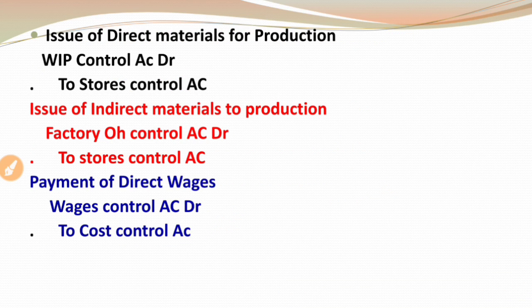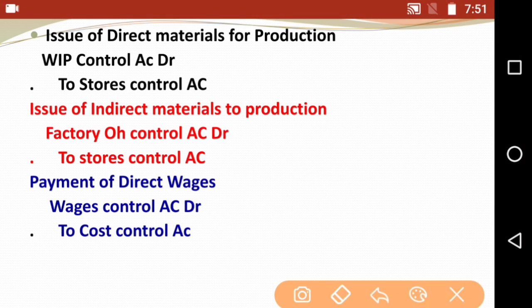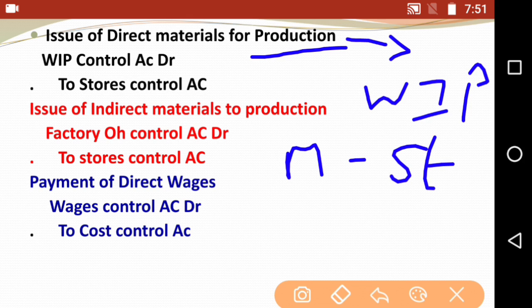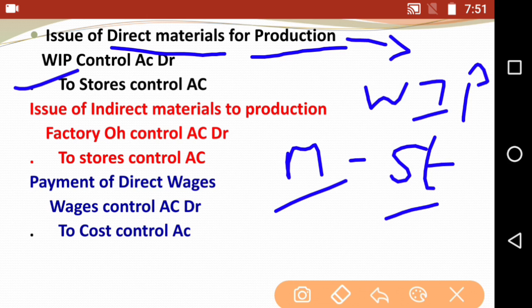Next is issue of direct materials for production. Since it involves materials going out, we credit stores, and since it is for production we debit WIP. The entry is: WIP control account debit to stores control account. Keep this basic rule in mind — production-related debit goes to WIP, and materials credit goes to stores.